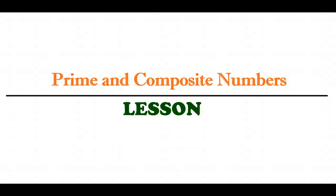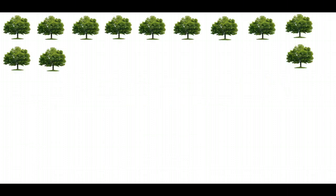This video lesson is all about prime and composite numbers. To talk about that, I want to consider a grove of trees. Suppose that you had 12 maple trees and you wanted to plant them in your yard in a grove, nice and orderly — so you wanted to put them in rows, with each row having an equal number of trees in a nice grid-like pattern.